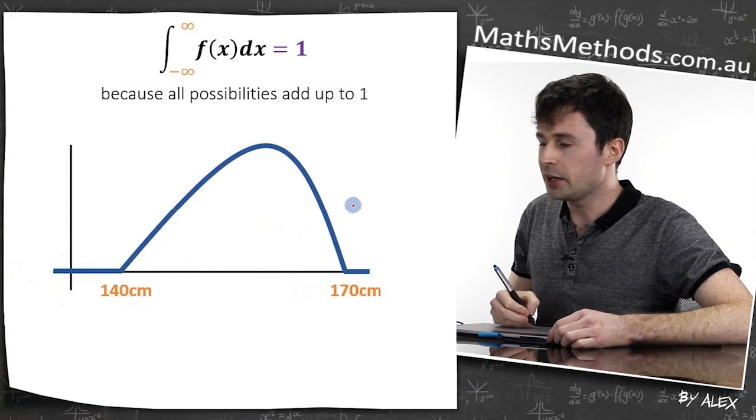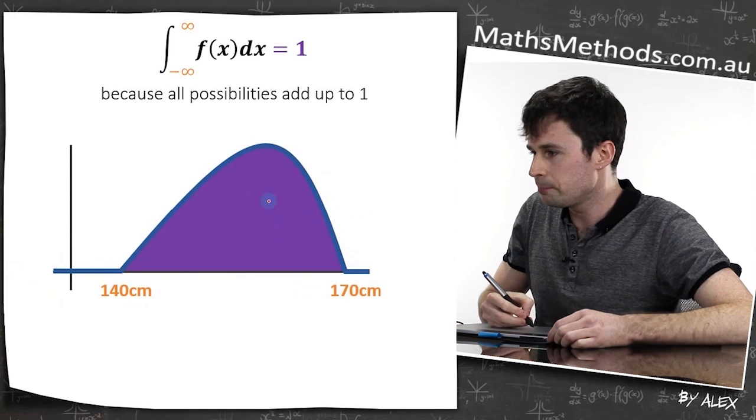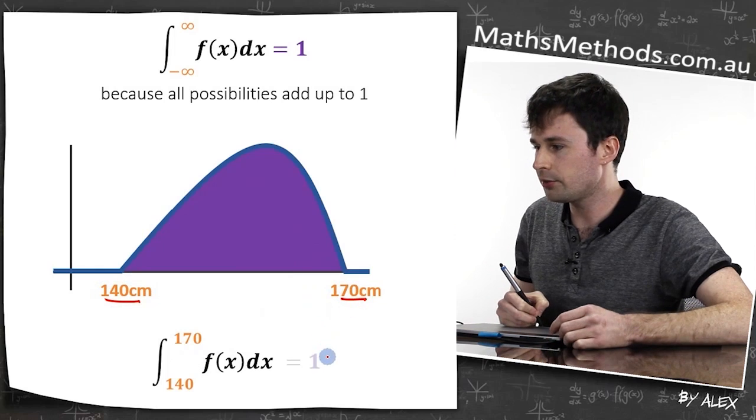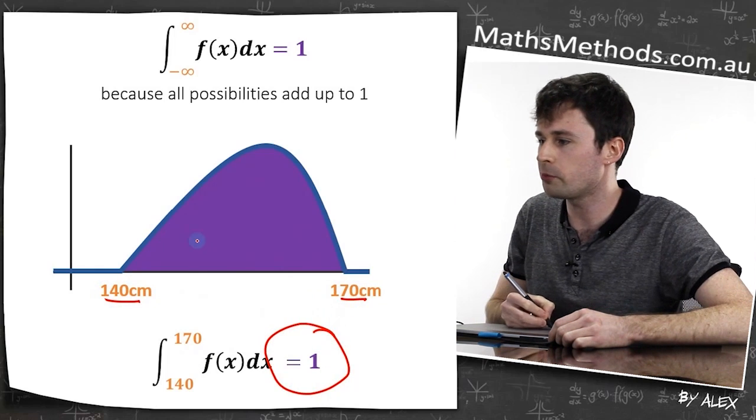If we look at something like this, the only area that exists is in this bit here. If we integrate between 140 to 170, it's going to give us one, because this is the total possibilities that could happen.